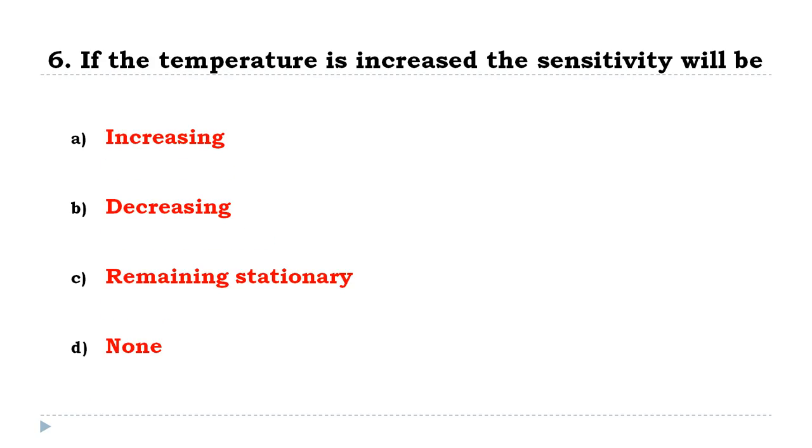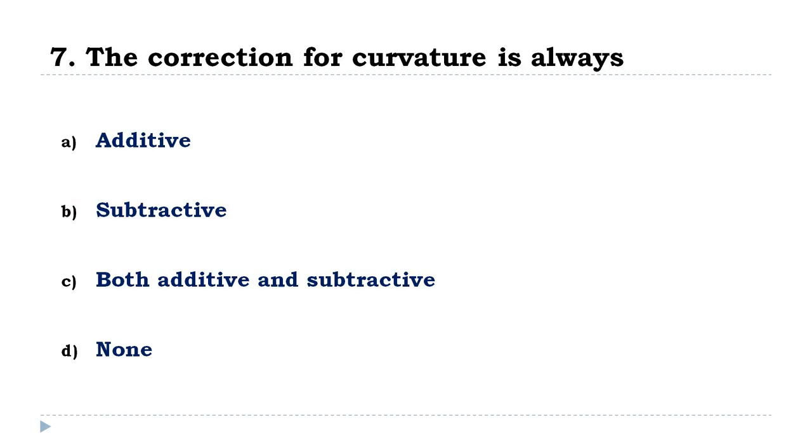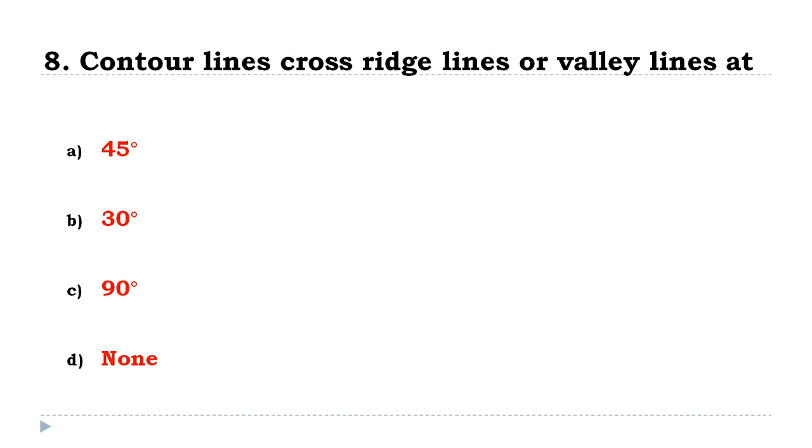If the temperature is increased, the sensitivity will be decreasing. The correction for curvature is always subtractive. Contour lines cross ridge line or valley line at 90 degree angles.